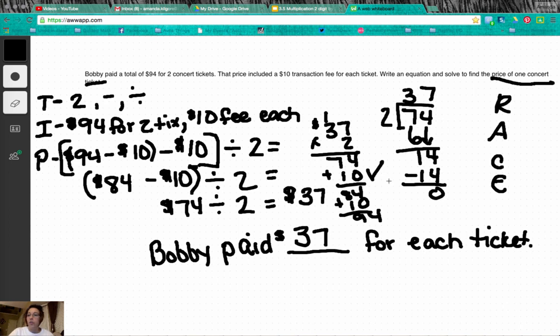Okay, so I have restated. I have answered all parts because I just had to tell the price of one ticket. I have cited my work by showing all of this work over here. It is now time to explain how I know this answer. So, Bobby paid $37 for each ticket. I know this...